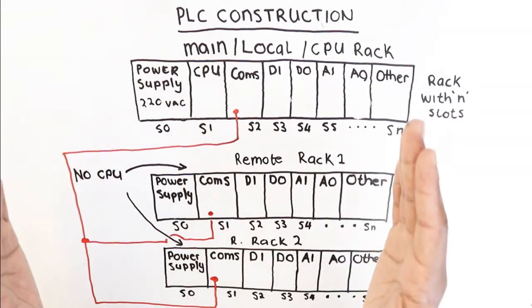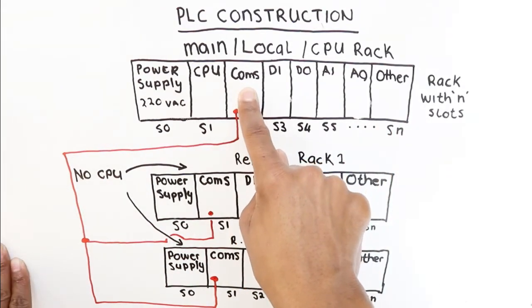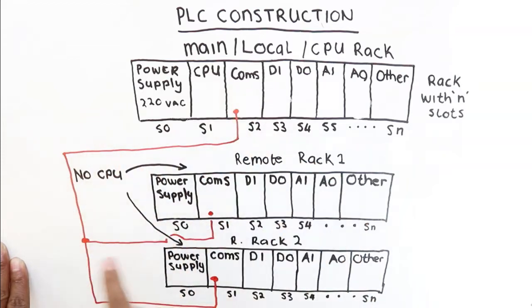This is just a general link to illustrate the concept that the comms card of your main rack can be used to interface or be linked with the other comms cards from your remote racks.